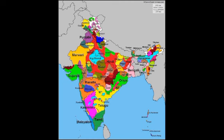Globally, the share of the majority religious denomination has gone down by approximately 22%, indicating that the world has become more heterogeneous.